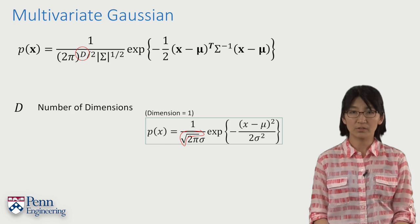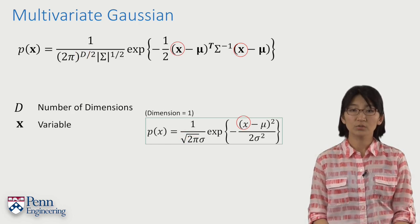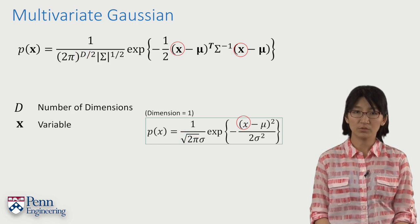d is the number of dimensions we are going to use, and x is the vector of variables whose probability we are attempting to quantify.